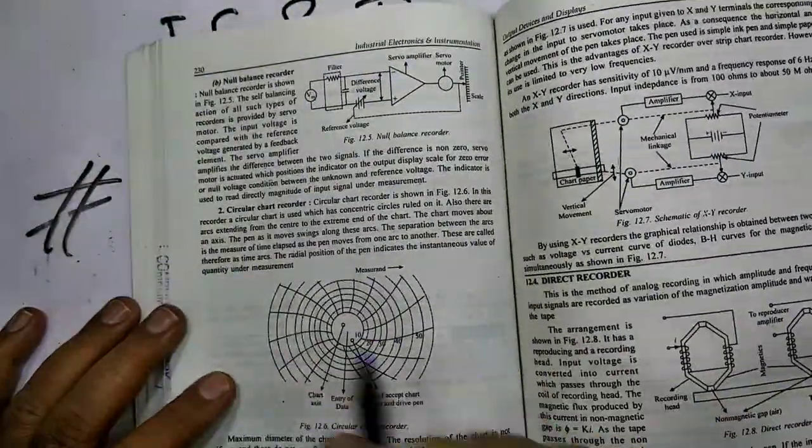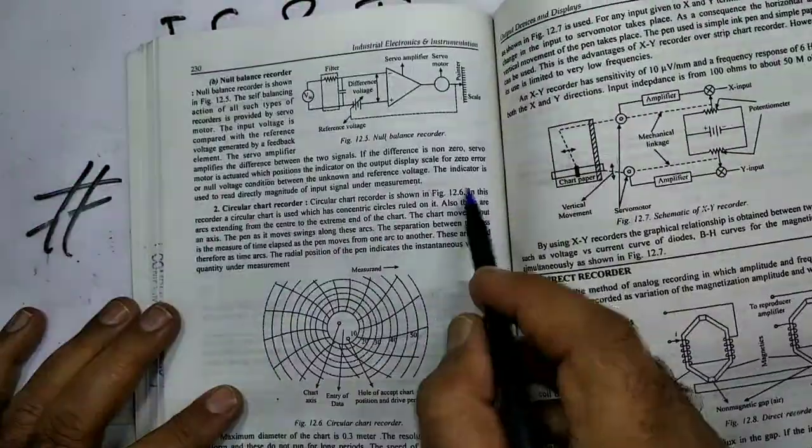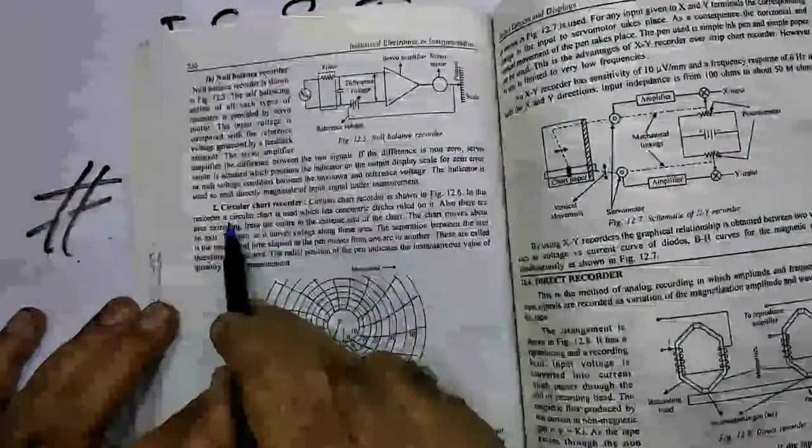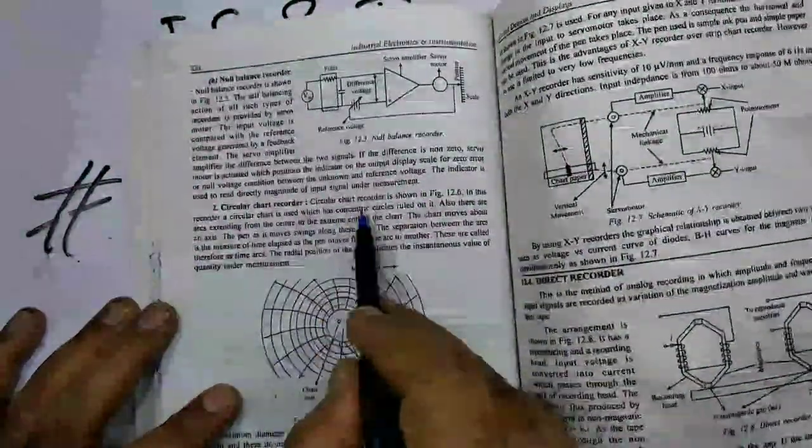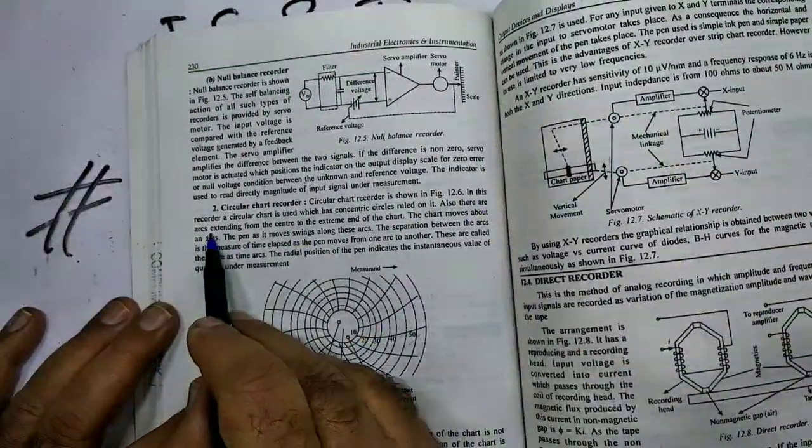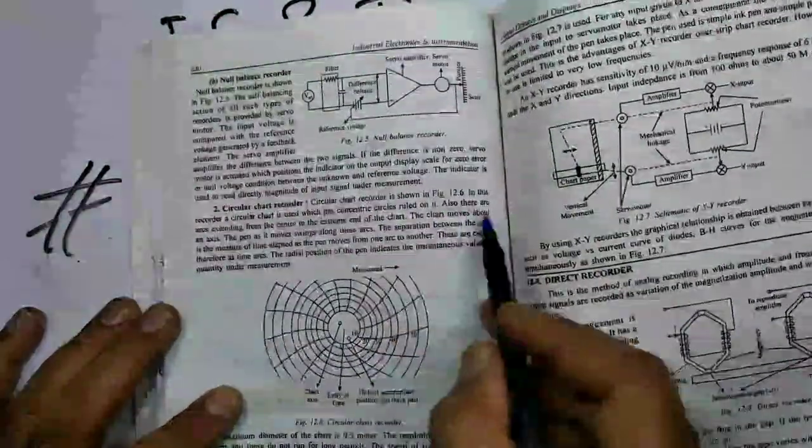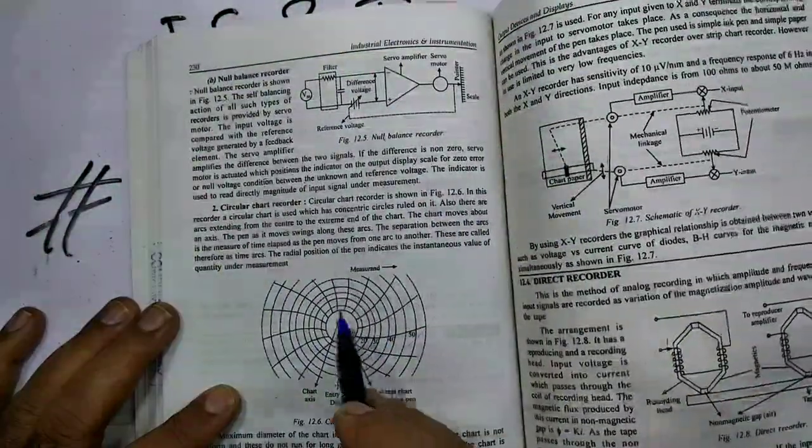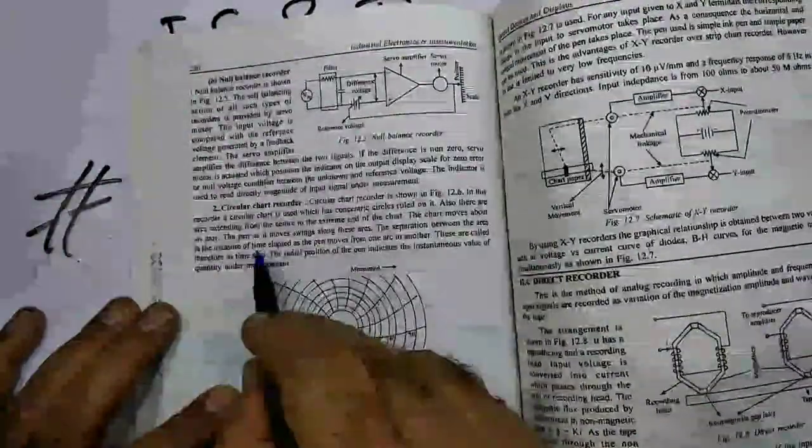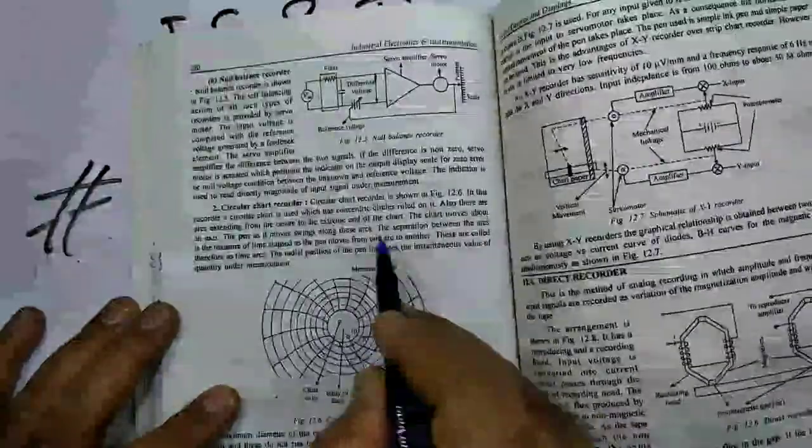Next is circular chart recorder. Circular chart recorder is shown in the figure. In this recorder, a circular chart is used which has concentric circles ruled on it. Also, there are arcs extending from the center to the extreme end of the chart. The chart moves about an axis. It moves like this and the pen as it moves swings along these arcs.